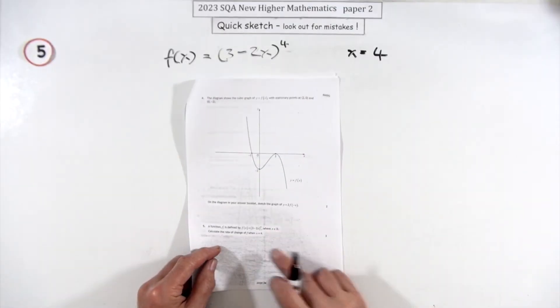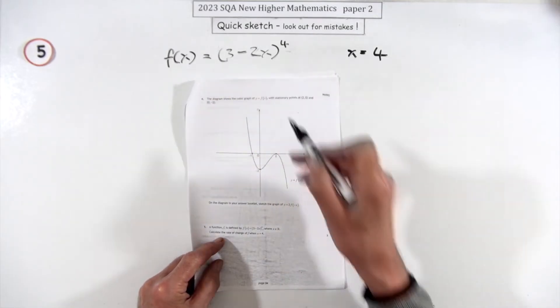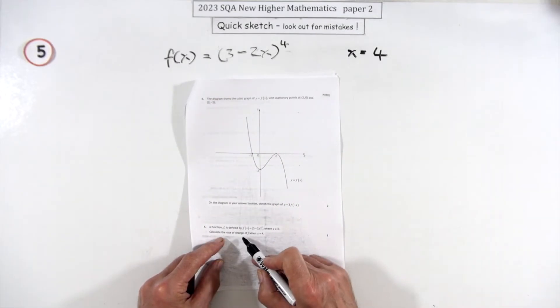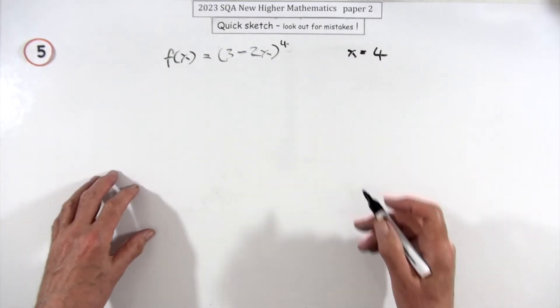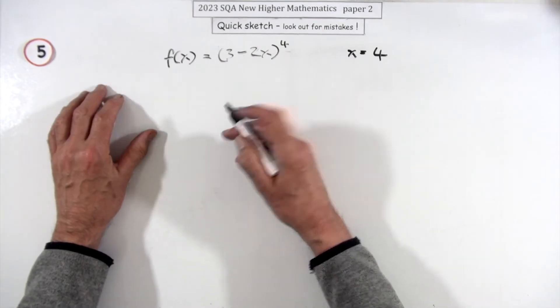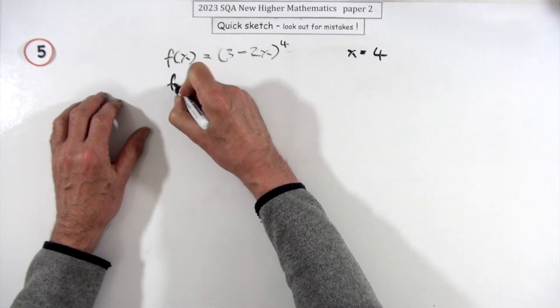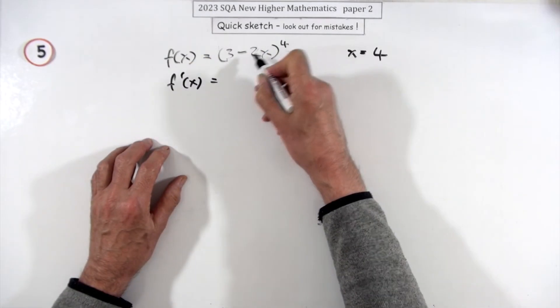Number five for three marks. A function is given by this expression here, used to calculate its rate of change when x is four. Now this is meant to be paper two - these questions have been really quite easy so far, especially for paper two.